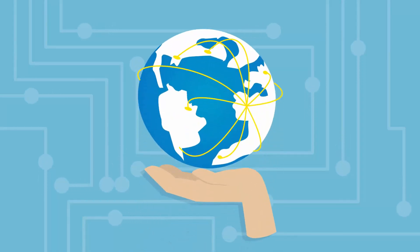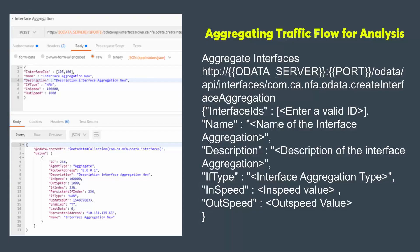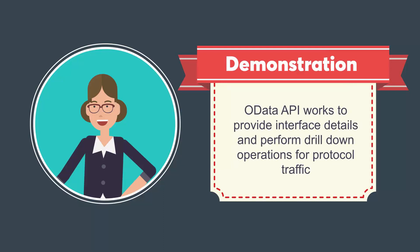If your environment spreads across multiple traffic domains, you can group the interfaces according to the traffic domain using the Aggregate Interfaces API and view the flow details for each traffic domain. Watch a demonstration that shows how the OData API works to provide interface details and perform drill-down operations for protocol traffic.